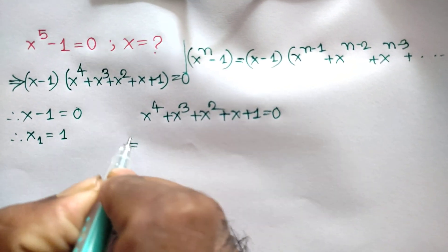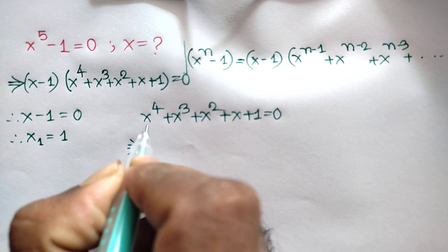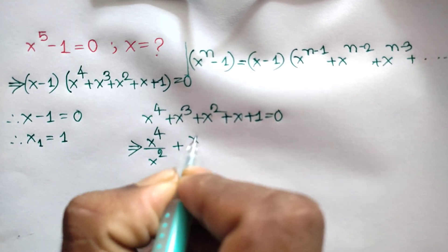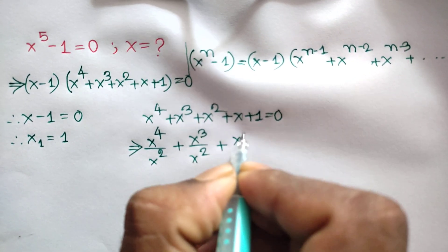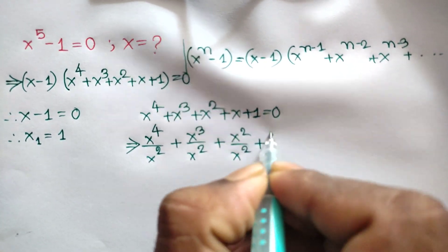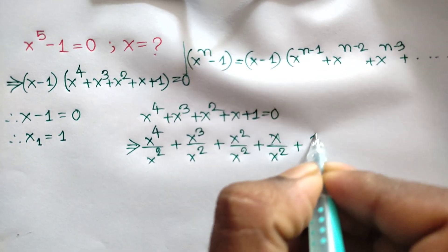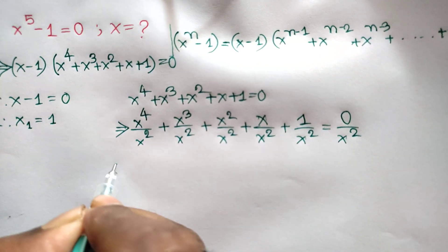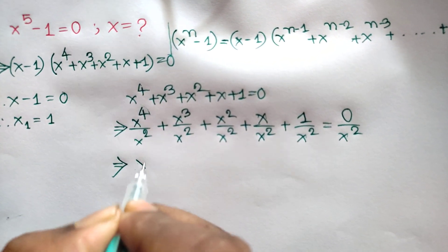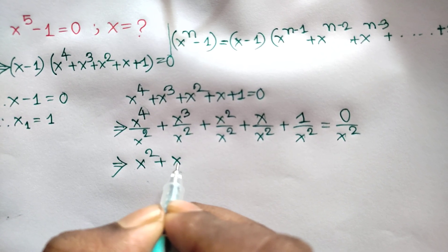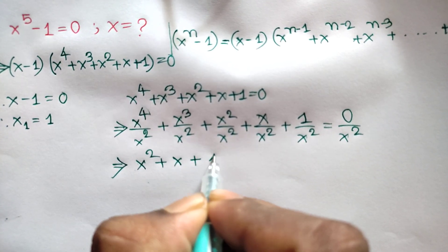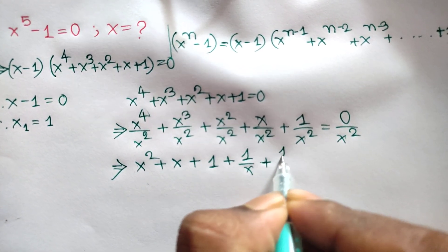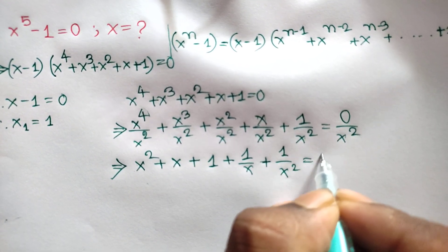Now, dividing both sides by x squared, we can write x to the power 4 over x squared plus x cubed over x squared plus x squared over x squared plus x over x squared plus 1 over x squared is equal to 0. This gives us x squared plus x plus 1 plus 1 over x plus 1 over x squared is equal to 0.